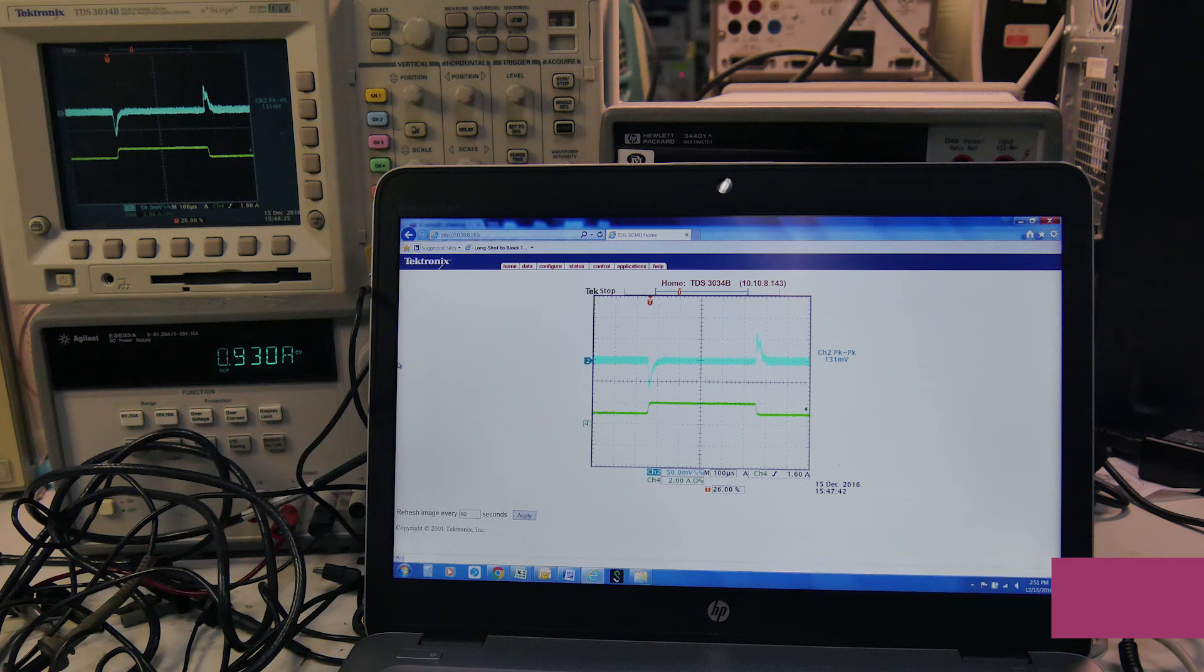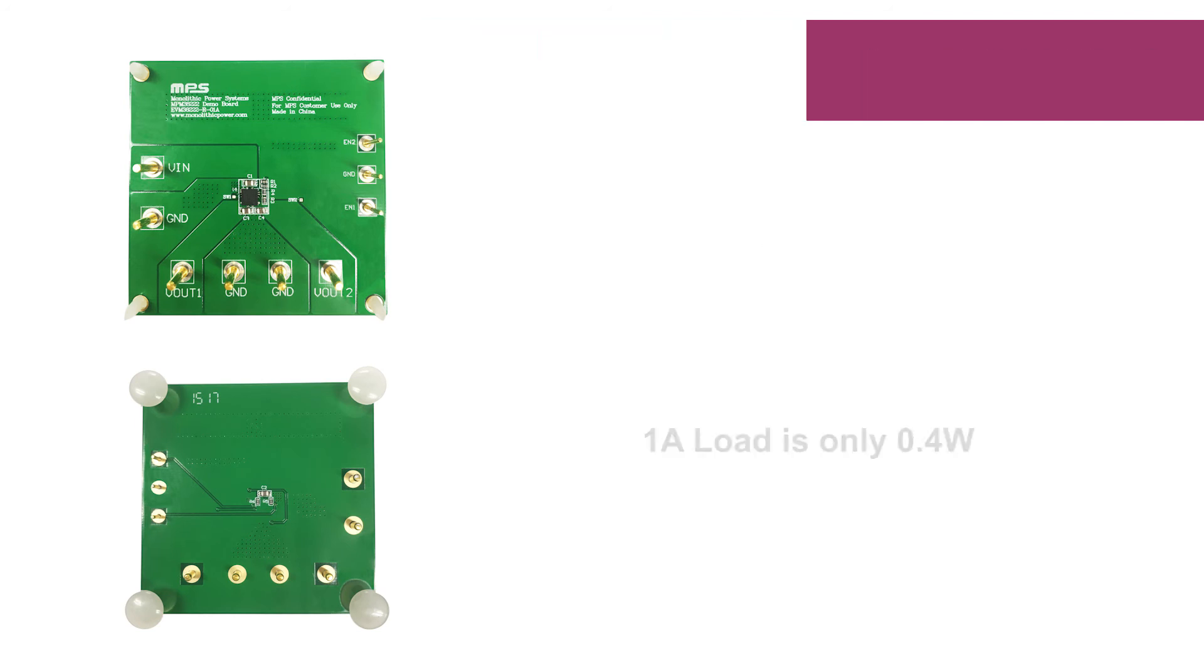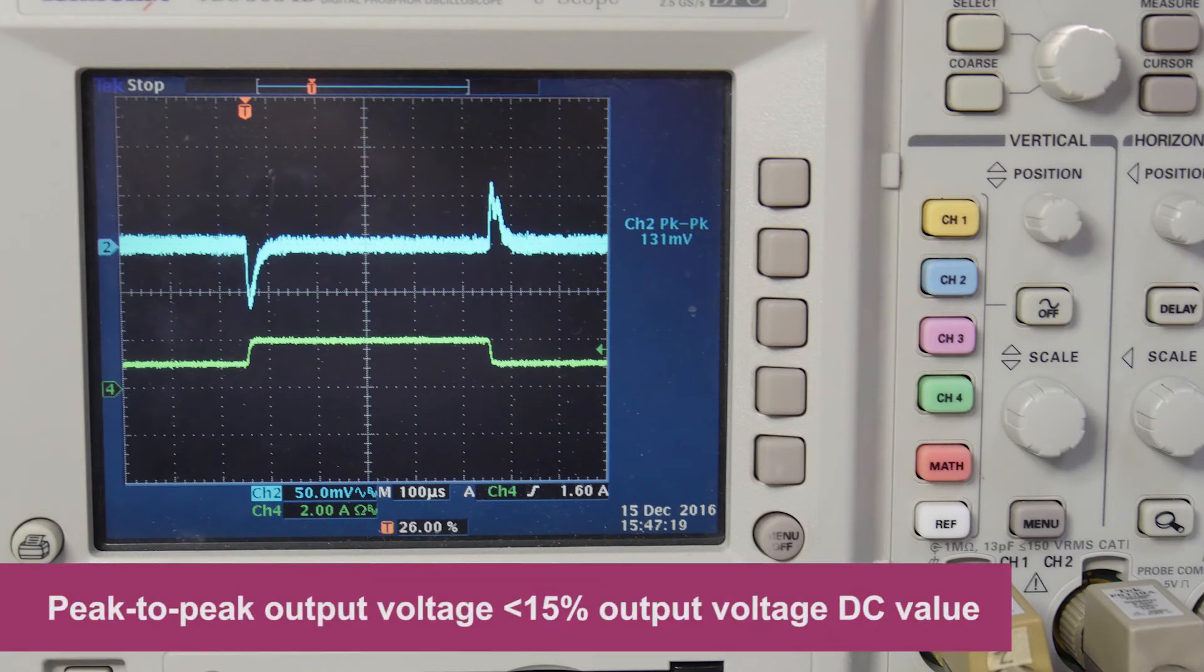The MPM38222 consumes only 1.5W at 1.8V and 2.5V output with 3.3V input and 2A load current. For 1A load current, the power consumption is only 0.4W. The peak-to-peak output voltage is less than 15% of the output voltage DC value.